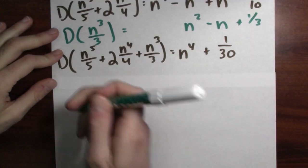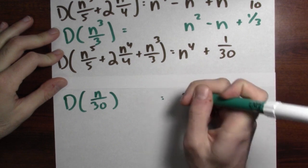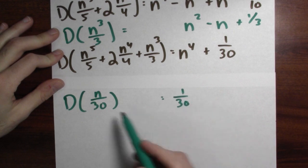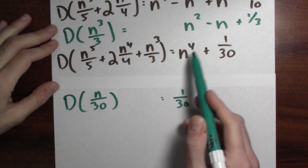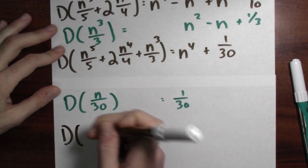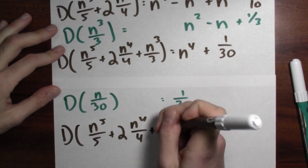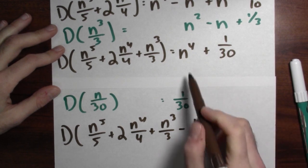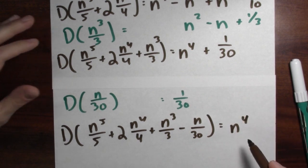Now I can get rid of the one thirtieth term. Look at the differences of the list of numbers n over 30 — each number in that list differs by one thirtieth from the previous. So if I subtract n over 30, then the differences in that list are exactly n to the fourth. Taking d of n to the fifth over 5 plus 2 times n to the fourth over 4 plus n to the third over 3 minus n over 30 gives n to the fourth plus one thirtieth minus one thirtieth, leaving just n to the fourth.